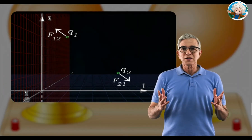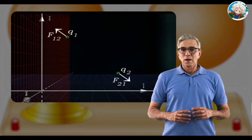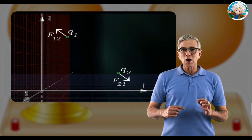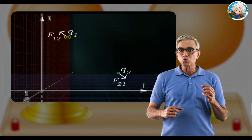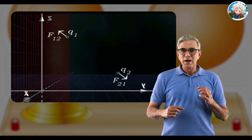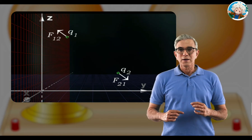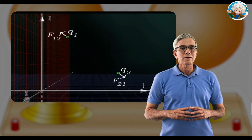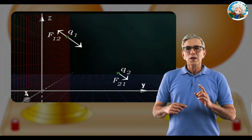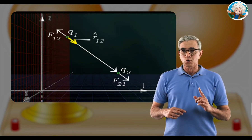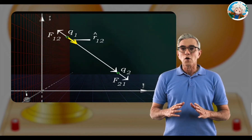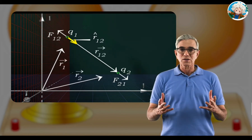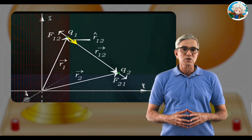Here, vector F₁₂ is the force on charge q1 exerted by charge q2, and vector F₂₁ is the force on charge q2 exerted by charge q1. Note that the unit vector r̂₁₂, in the direction from q1 to q2, lies on the line joining both charges. To represent these forces as vectors: